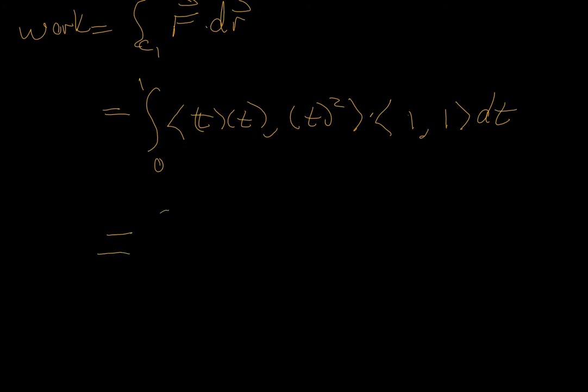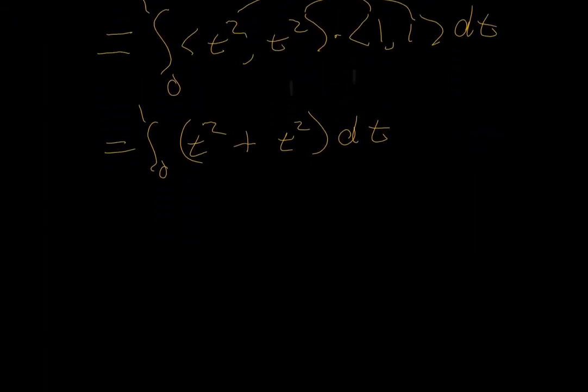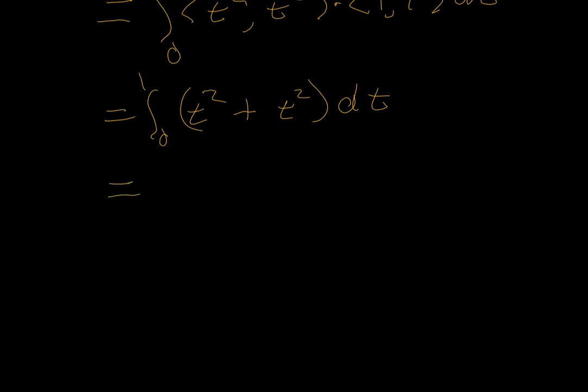And we've got to get here t squared comma t squared dot product 1 comma 1. That's the same as from 0 to 1, 1 times t squared plus 1 times t squared, which is 2t squared. And when we integrate this, we will get 2t cubed over 3, evaluated from time as 0 to time as 1. And this gives us 2 thirds.